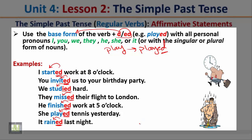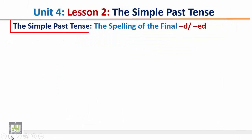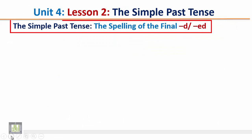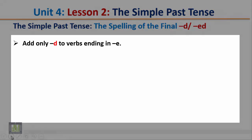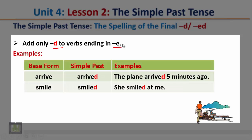Now, the spelling of the final -ed. Rule 1: add only -d to verbs ending in -e. For example, 'arrive' ends in -e, so we add only -d. Another example: 'She smiled at me' — the verb 'smile' ends in -e, so we add only -d.